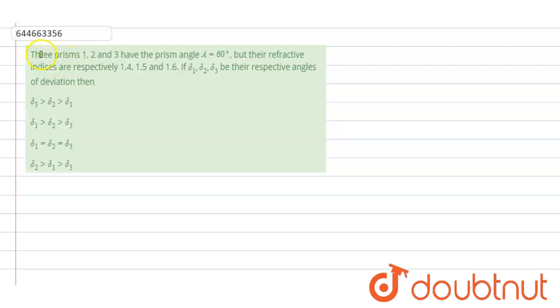Hello students, so the question is 3 prisms 1, 2 and 3 have the prism angle 60 degrees but their refractive indexes are respectively 1.4, 1.5, 1.6. del 1, del 2, del 3 be their respective angles of deviation then